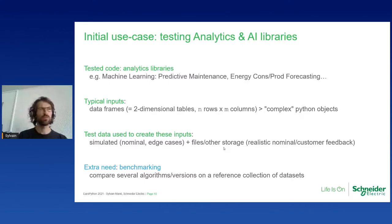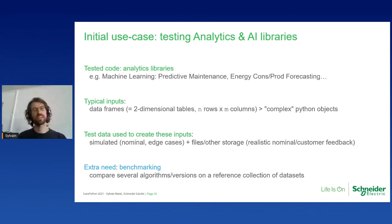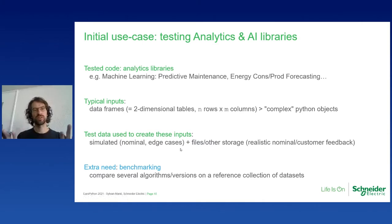These complex objects are the kind of inputs we use for tests. We can source them from files — for example, we capture a table from production software where something wasn't working and include it in the tests. But sometimes we want to push the limits of the algorithm, and in that case it's better to simulate — to create a table programmatically, controlling everything like the correlations in the columns. So that's at least two ways to source the test data.